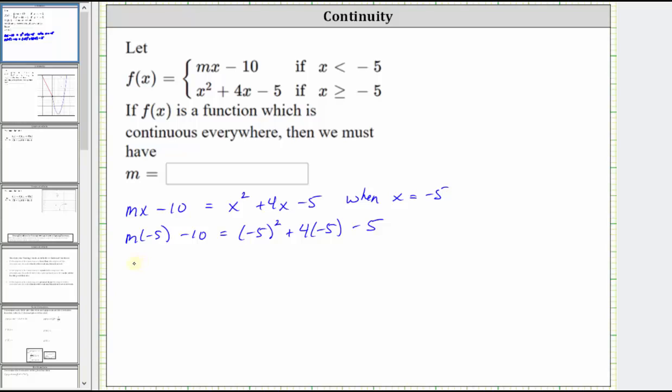Simplifying, m times negative five is negative five m. On the right, the square of negative five is positive 25 plus four times negative five is minus 20 and then minus five. Still simplifying on the right, 25 minus 20 minus five is zero, giving us negative five m minus 10 is equal to zero.